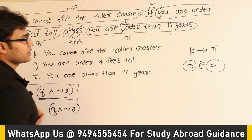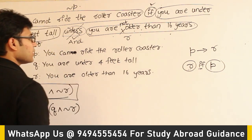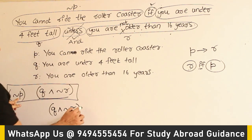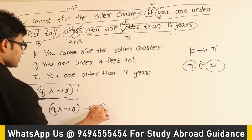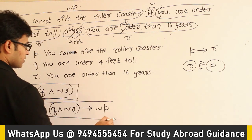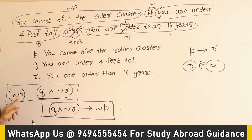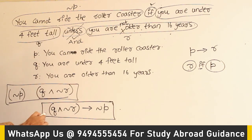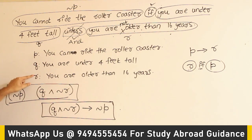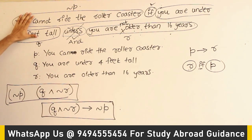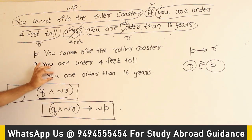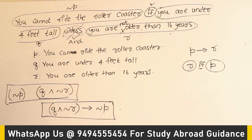And whatever is before 'if' is the conclusion. In this case, before 'if' is ¬P, so that is going to form the conclusion. Therefore, the entire representation is: (Q ∧ ¬R) → ¬P. This is how you can represent this statement. These variable names vary depending on what has been assumed. In the exam, they will give you the entire statement and also say that P represents this, Q represents this, R represents this — then you find which of the options matches.